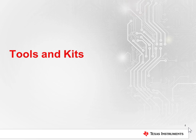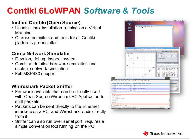Now, let's talk about some software tools and development kits that you can use to get started. There are a number of software tools available free of charge on Contiki, including the GCC compiler, the CUJA network simulator, and the Wireshark packet sniffer. All of these tools are available as a one-click download free of charge from Thingsquare. For more information, go to the TI 6LowPAN wiki where you can find the download link.